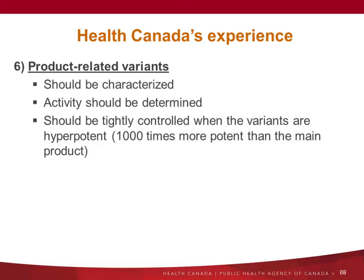In terms of product-related variants, as mentioned, they should be characterized, activity should be determined, and they should be tightly controlled when the variants are hyper-potent. I have seen a product-related variant that was 1,000 times more potent than the desired product. In that case it's really important — they need to control it, and also maybe try a process change to understand why they get that hyper-potent level. As a regulator when you see this, there may be a significant safety and efficacy aspect to consider.